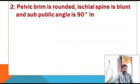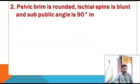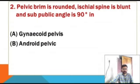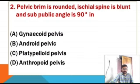Second question. Pelvic brim is rounded, ischial spine is blunt, and sub-pubic angle is 90 degrees in which pelvis? Options: gynecoid pelvis, android pelvis, platypelloid pelvis, anthropoid pelvis.